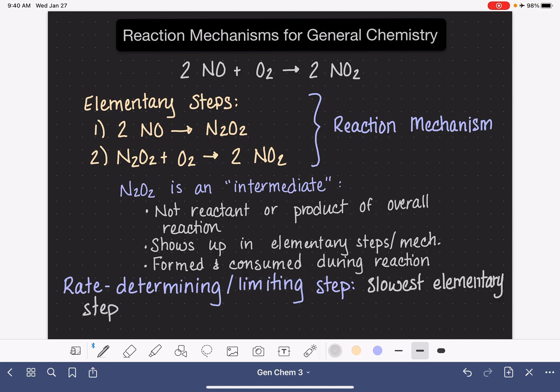The slowest elementary step is kind of the bottleneck for the overall reaction. So the rate determining step, the slowest elementary step, is the one that determines the overall rate of the whole entire reaction. And it also determines the rate law for the entire reaction.